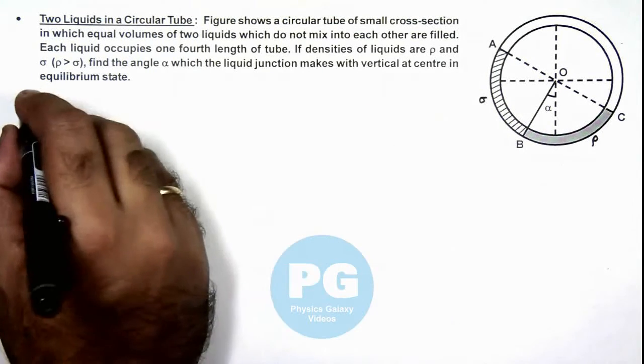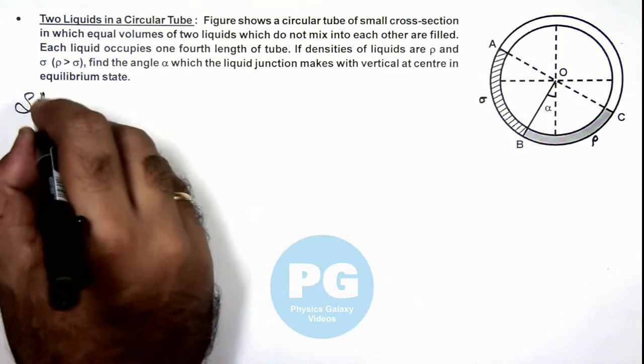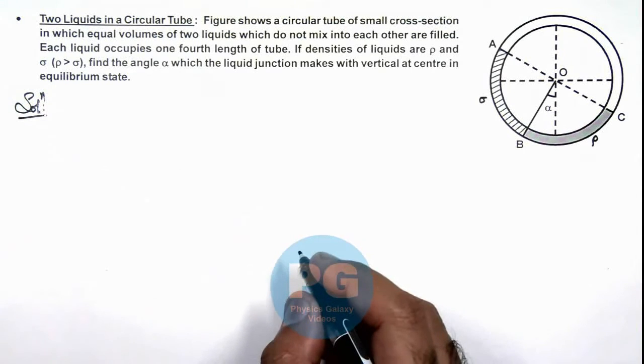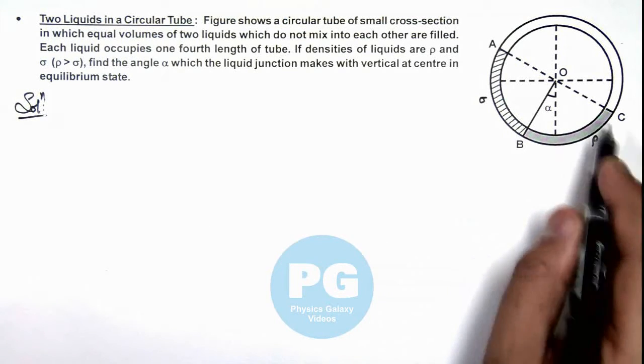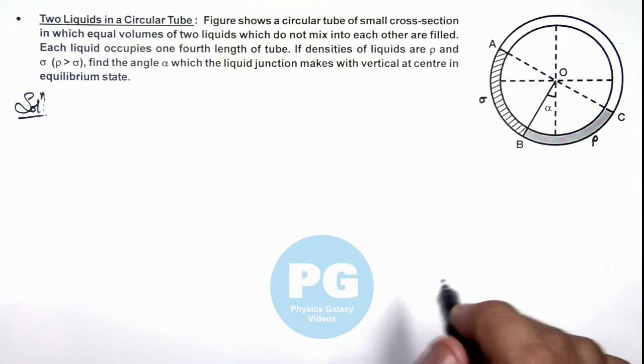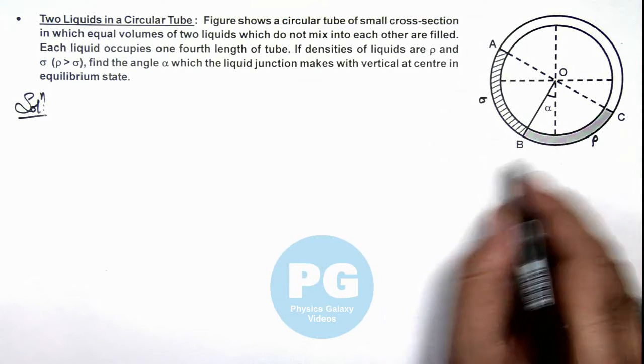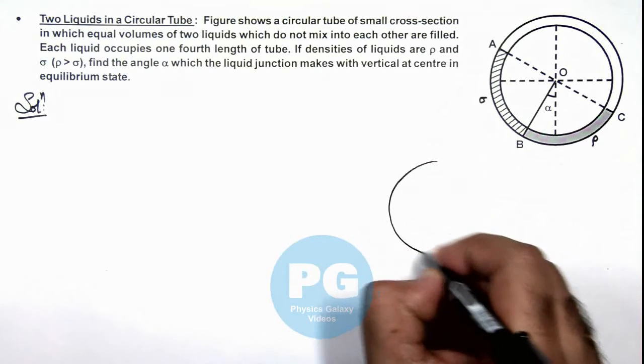Here we can analyze this situation as the liquid is in equilibrium. Then we can calculate the pressure at bottom, that should be same if we calculate it from both sides. So here, to analyze it, I'll redraw the figure of this tube.